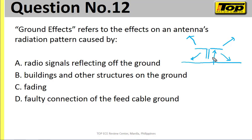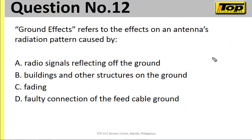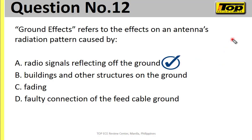The higher the vertical height of your horizontal antenna, the better — you'll get the figure-of-8 radiation pattern for the half-wave dipole. If not, it will have an effect on the antenna. The cause of ground effect is the radio signals reflecting off the ground. So the answer is letter A.